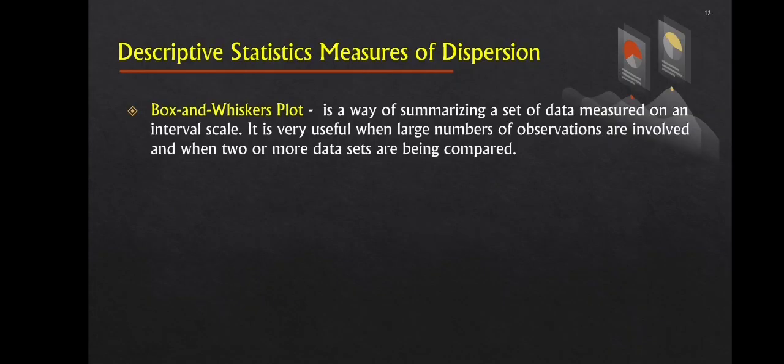Lastly, we have the box and whiskers plot. Box and whiskers plot is a method for summarizing data measured on an interval scale. It is extremely useful when comparing two or more data sets with a large number of observations.